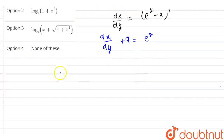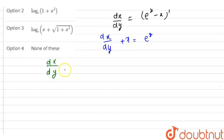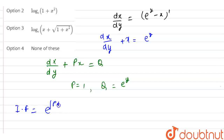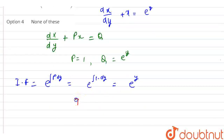Now I am solving this. First of all, I am writing the general form of the linear differential equation: dx/dy plus Px equals Q. By comparing, my P is 1 and my Q is e raised to the power of y. Now I am solving for my integrating factor. My integrating factor equals e raised to the power of the integration of P dy, which is e raised to the power of the integration of 1 dy, equals e raised to the power of y. So e raised to the power of y is my integrating factor.